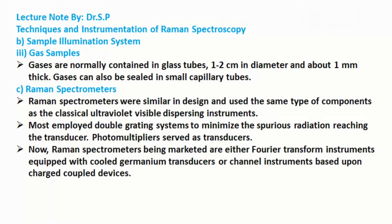Raman spectrometers were similar in design and used the same type of components as classical ultraviolet-visible dispersing instruments. Most employed double grating systems to minimize spurious radiation reaching the transducer, and photomultipliers served as transducers. Now, Raman spectrometers being marketed are either Fourier transform instruments equipped with cooled germanium transducers or channel instruments based upon charge-coupled devices.